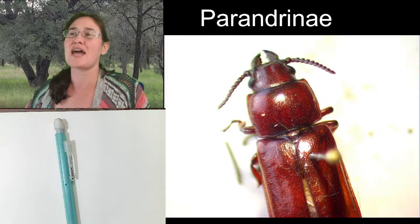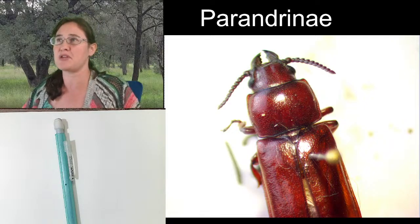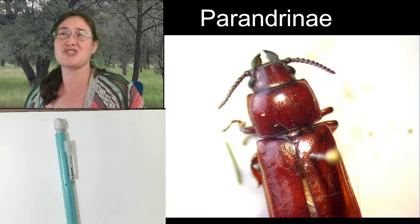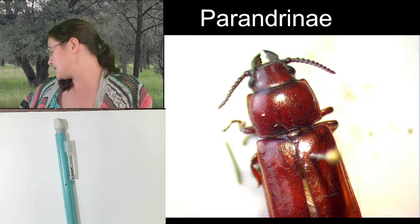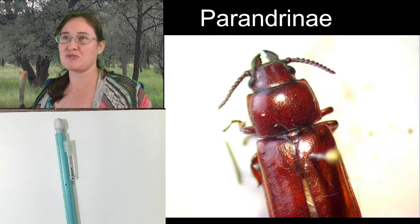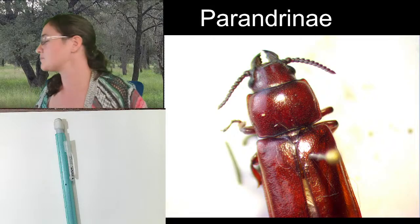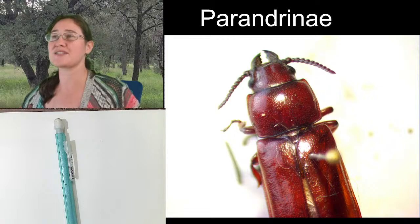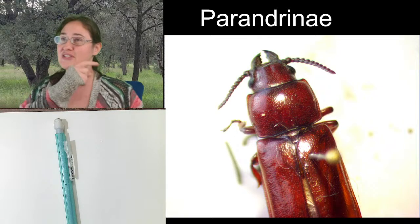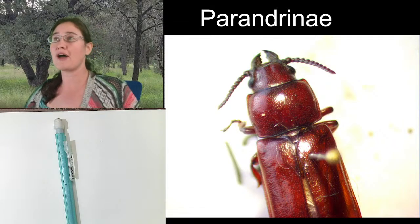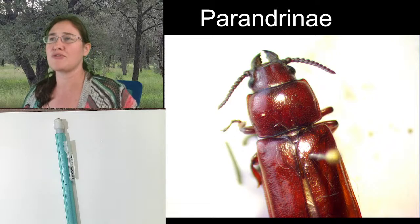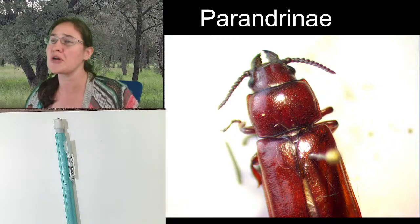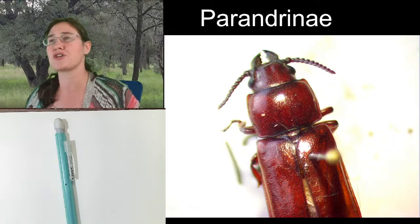So Parandrinae is our subfamily, and that's about as far as I'm going to be able to go right now. I do believe there are something like two genera in North America. I wish there was a common name for this type of longhorn beetle with the short antennae, but there is not really a common name for the subfamily. There is a common name for one of the genera - there's one genus named the pole borers, so we could almost call them pole borers, but I'm not sure if they're pole borers or just closely related.